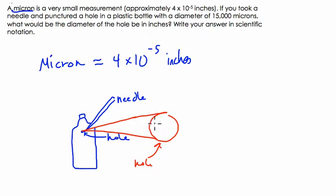They're saying that the diameter here, call it d, d equals 15,000 microns. What would the diameter of the hole be in inches? So what would this diameter be in inches? Write your answer in scientific notation.